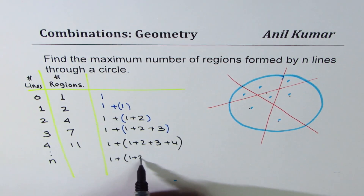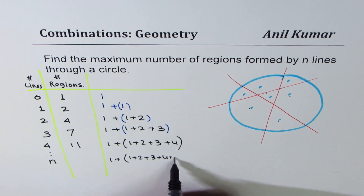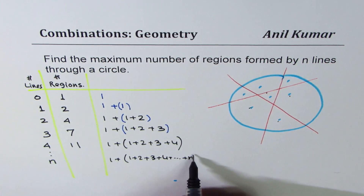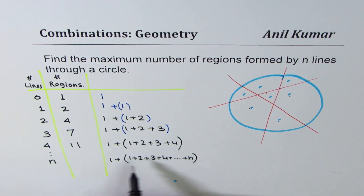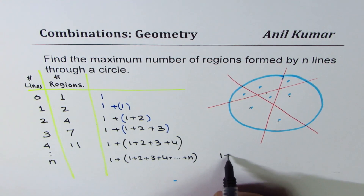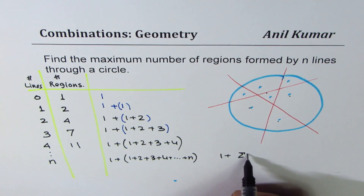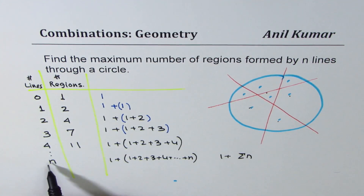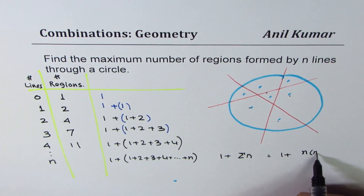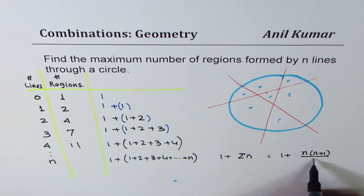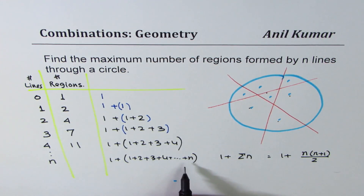Looking into this, if we go for n lines then we expect this to be one plus two plus three plus four plus so on till n — that is the sum of n numbers. In combination notation you could write this as one plus sigma n, where n is the number of lines. This sum of the series equals one plus n times (n plus one) divided by two — that's the formula for the sum of n numbers.